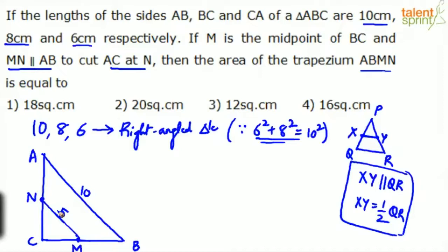Now what about the other sides? See, we know that the three sides are 10, 8 and 6. So if this is 10, let us assume AC is 8. AC is 8. This complete length is 8.